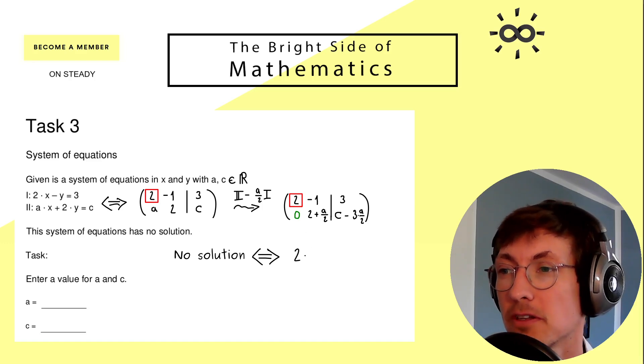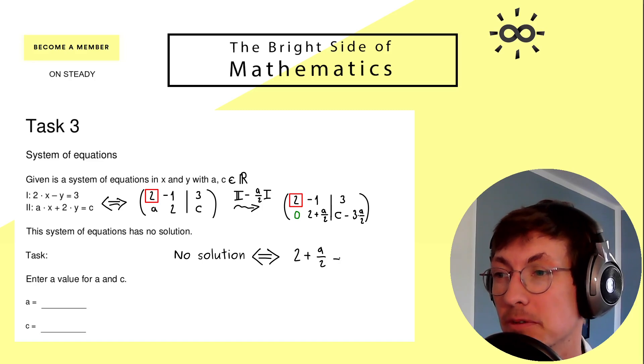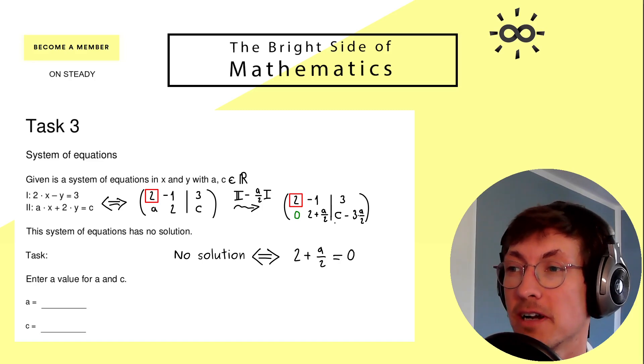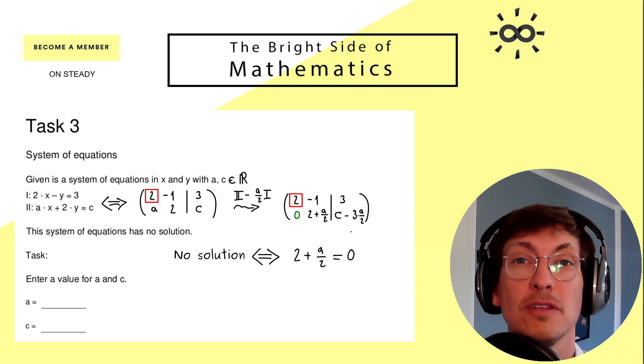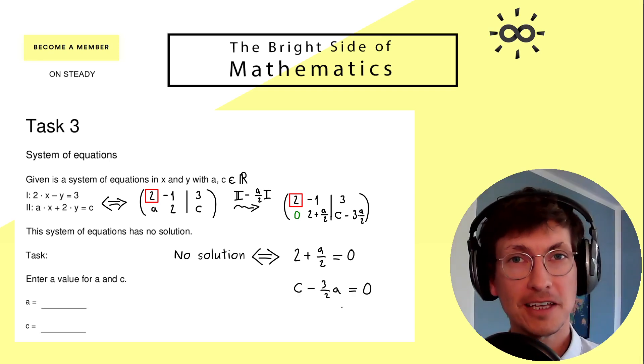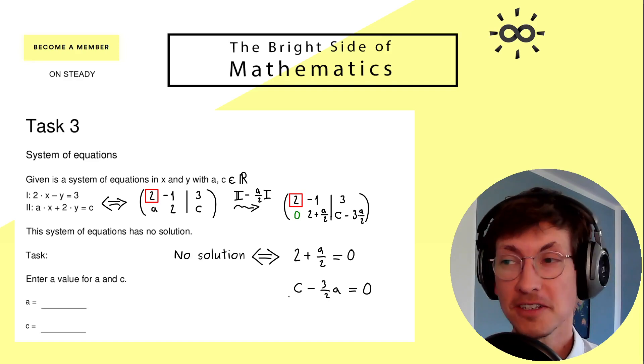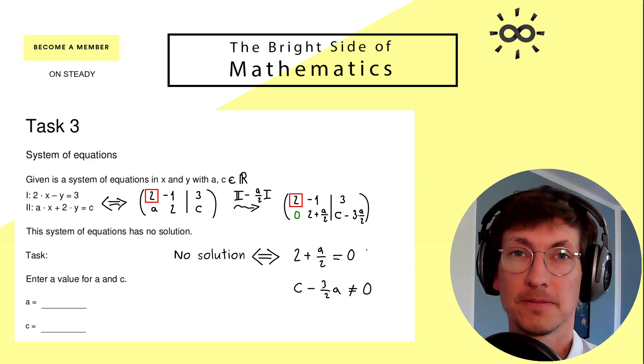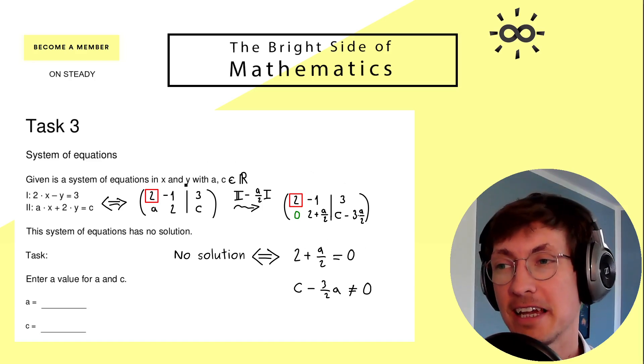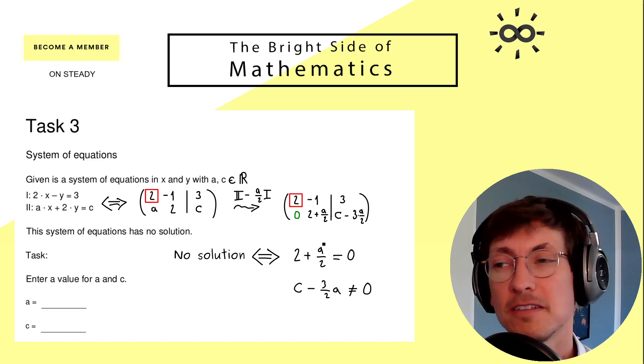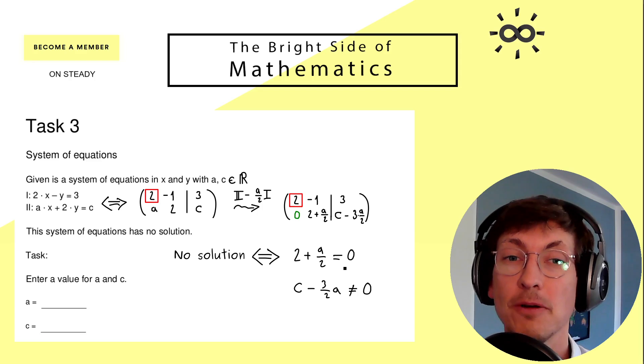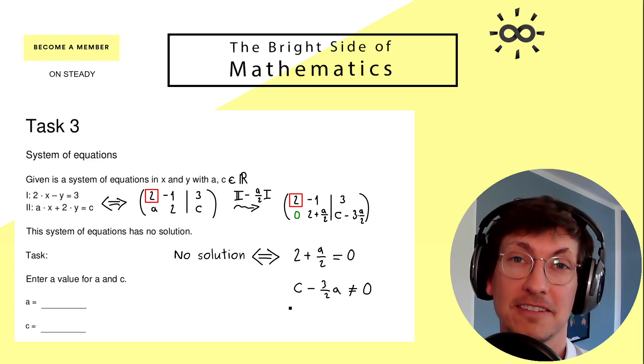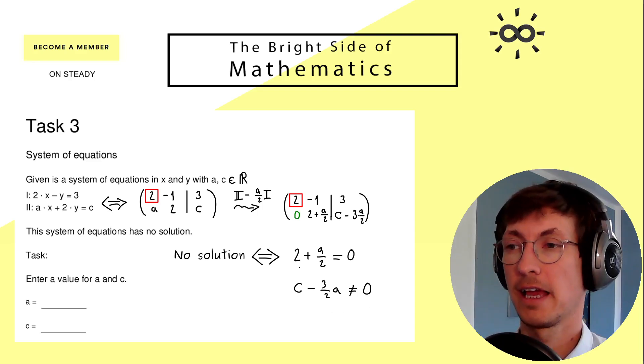Hence we get two equations here. First, no solution means 2 + a/2 is equal to zero, and on the right-hand side this one should be not equal to zero. So again, you could say we get two linear equations, but the second one here is actually an inequality.